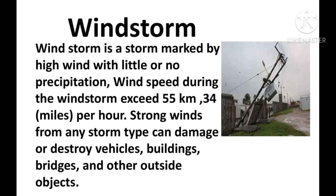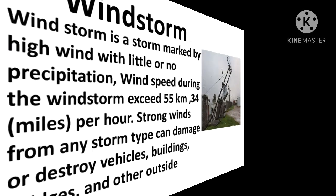A wind storm is a storm marked by high wind with little or no precipitation. Wind speed during a wind storm exceeds 55 kilometers, or 34 miles, per hour. Strong winds from any storm type can damage or destroy vehicles, buildings, bridges, and other outside objects.